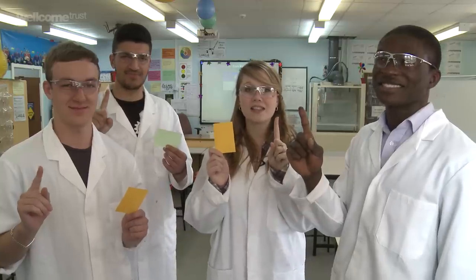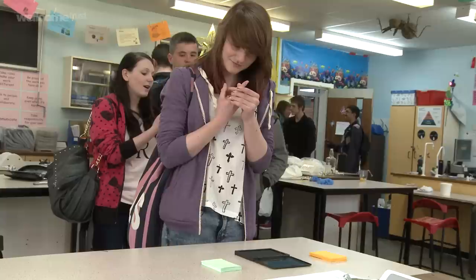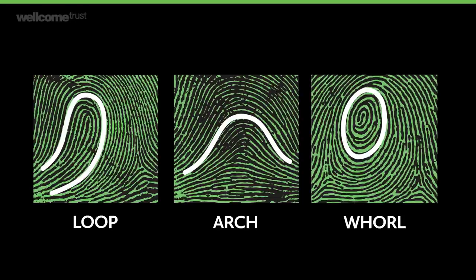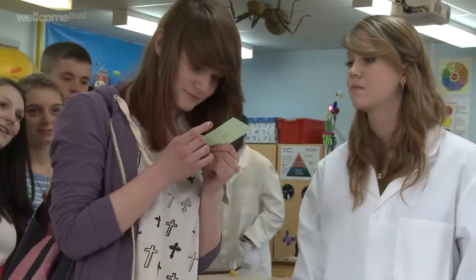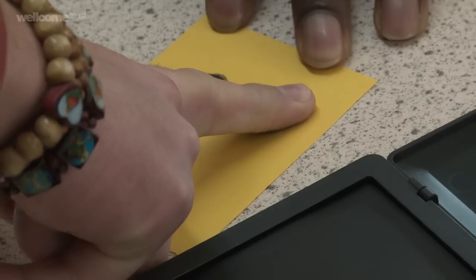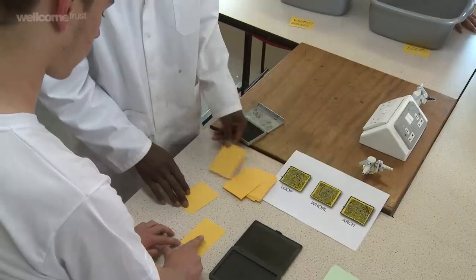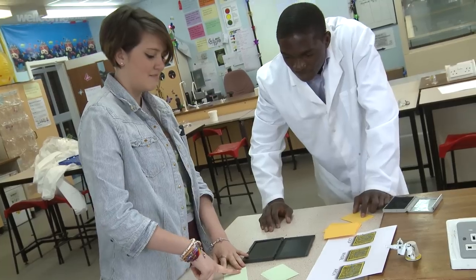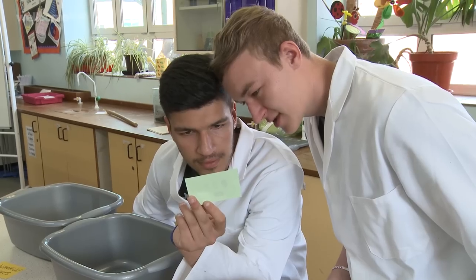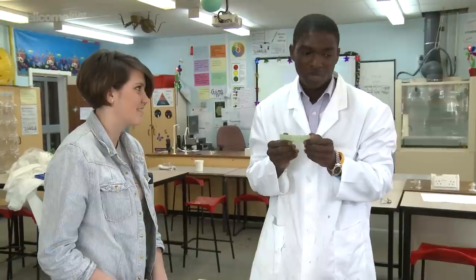Now let's get some results. We collected fingerprint data by having participants place their right index finger on a pad, then identified each pattern type — recording loops, whorls, and arches as we went.